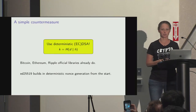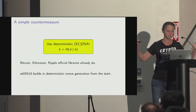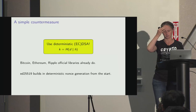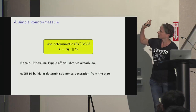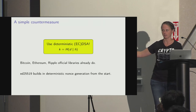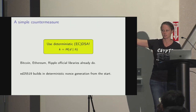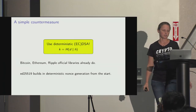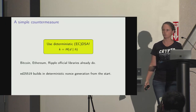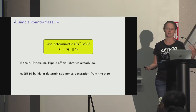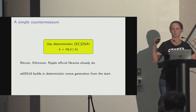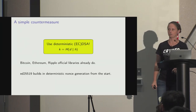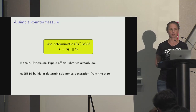There is a simple, well-known countermeasure: use deterministic ECDSA. Generate your secret nonce by HMAC-ing your secret key and message hash — RFC 6979 standardizes this. All official libraries for Bitcoin, Ethereum, and Ripple already do this and have for years. Everything we've discussed comes from non-official implementations. ED25519 builds deterministic nonce generation in from the start; ECDSA probably should have but didn't.